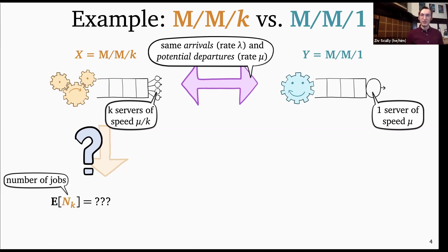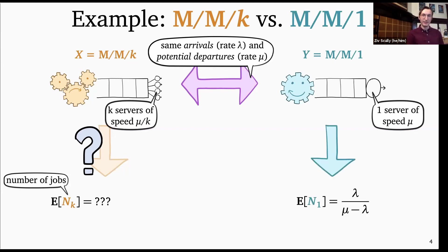The key idea of this coupling argument is that we give the exact same Poisson processes for arrivals and potential departures to both systems. That's the first step: come up with an easy system analogous to our complex system and give them the same random input. The next step is to answer the question for the easy system — the formula for the mean number of jobs in an M/M/1 is standard. The next big question, the heart of most coupling arguments, is how we show that having the same random input implies similar answers.